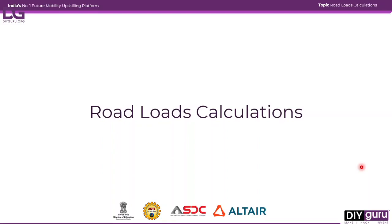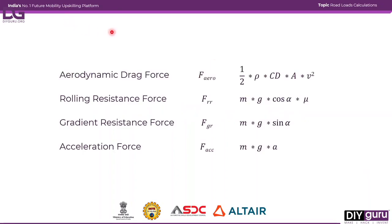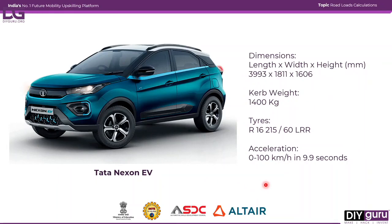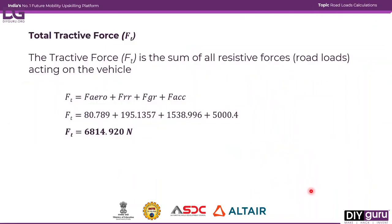In this video we will do the remaining part of our road loads calculation. So far we have seen what road loads or resistive forces are acting on a vehicle, where they come from, and we have derived their equations. Moving on, we have considered the vehicle Tata Nexon EV for our calculations. These are the specifications of Tata Nexon EV. We have already calculated the total tractive force, which is the sum of all resistive forces acting on the vehicle.